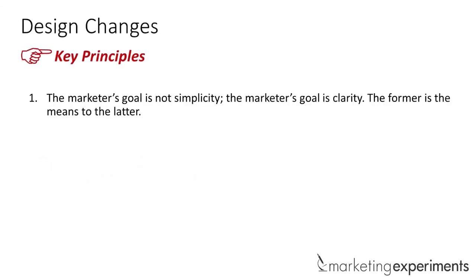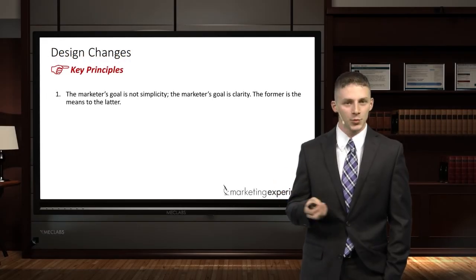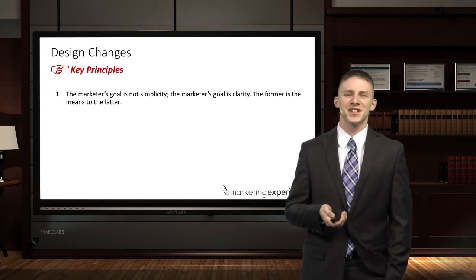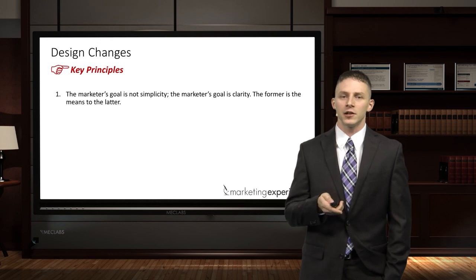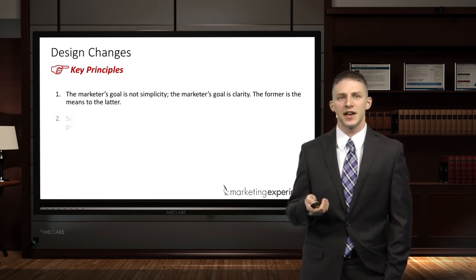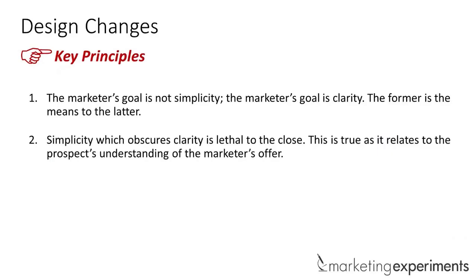Let's start with design. The first thing we need to understand is that the marketer's goal is not simplicity — it's clarity. Simplicity is just a means to the latter. We've heard about simplicity from Apple and Jony Ive, but what we've discovered is that simplicity is just one tool, and clarity is the ultimate end. The reason simplicity isn't the goal is because in some cases it can actually obscure clarity — and by clarity, I mean the prospect's understanding of the marketer's offer.